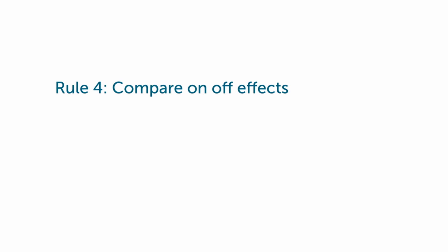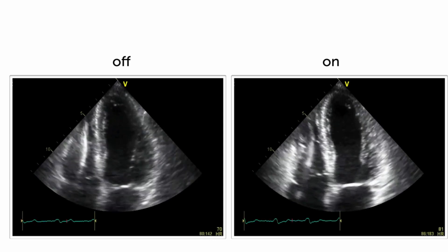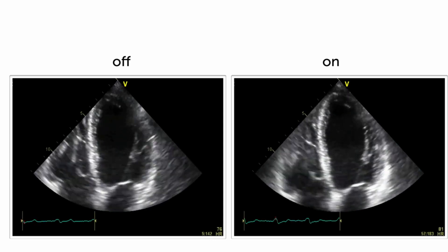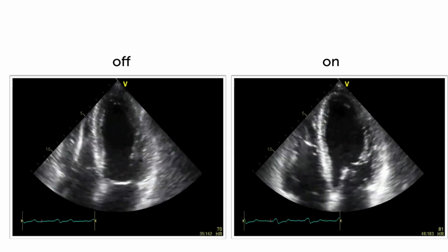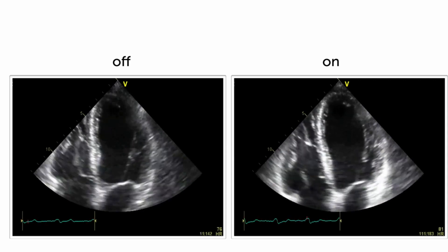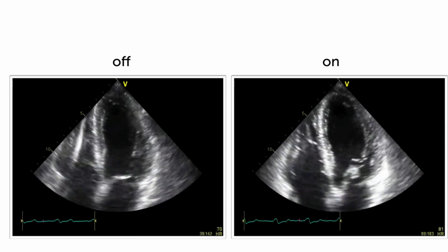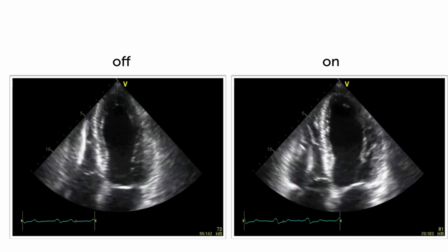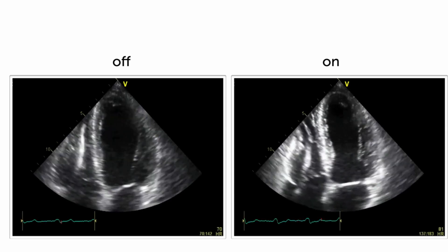Rule number four: compare on and off effects. Here is an example of how that is done. On the left hand side, you see a patient where the pacemaker, the CRT system is off, and on the right when it is turned on. By this simple comparison, I can see the effects of CRT therapy and immediately determine whether or not the patient must have benefited from the procedure or not. Sometimes these differences are subtle, but sometimes they're dramatic — and the more dramatic they are, the more the patient probably benefited from the procedure.